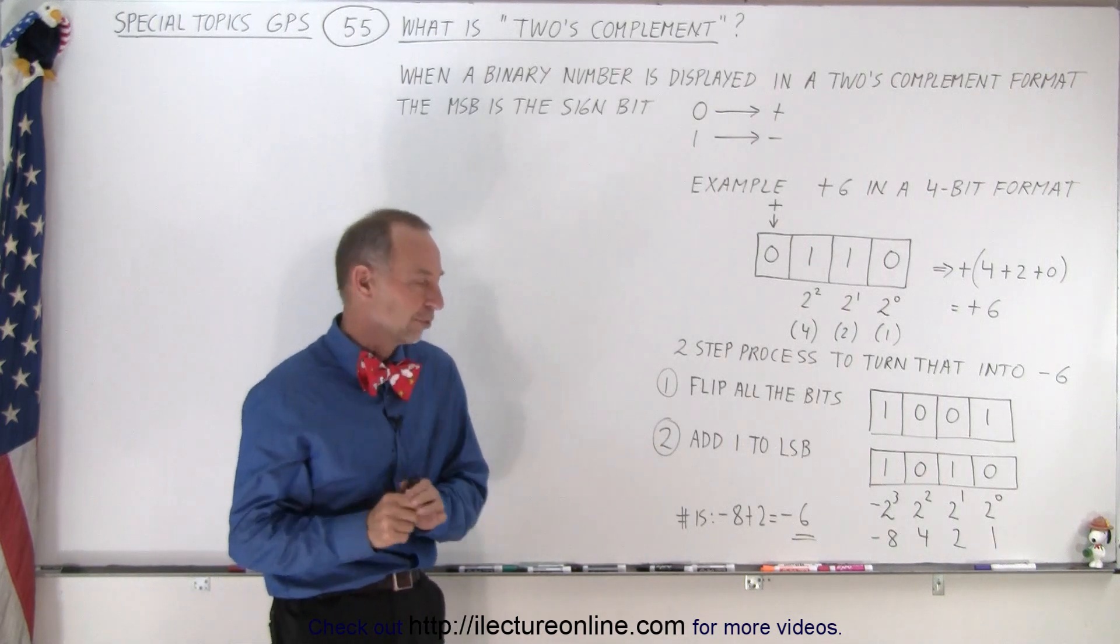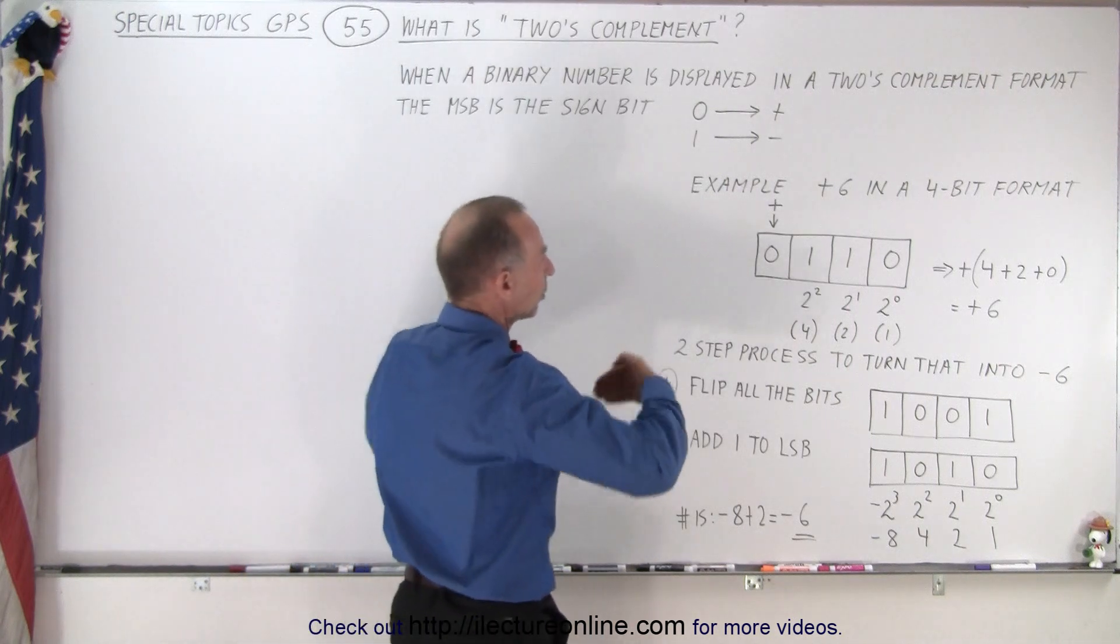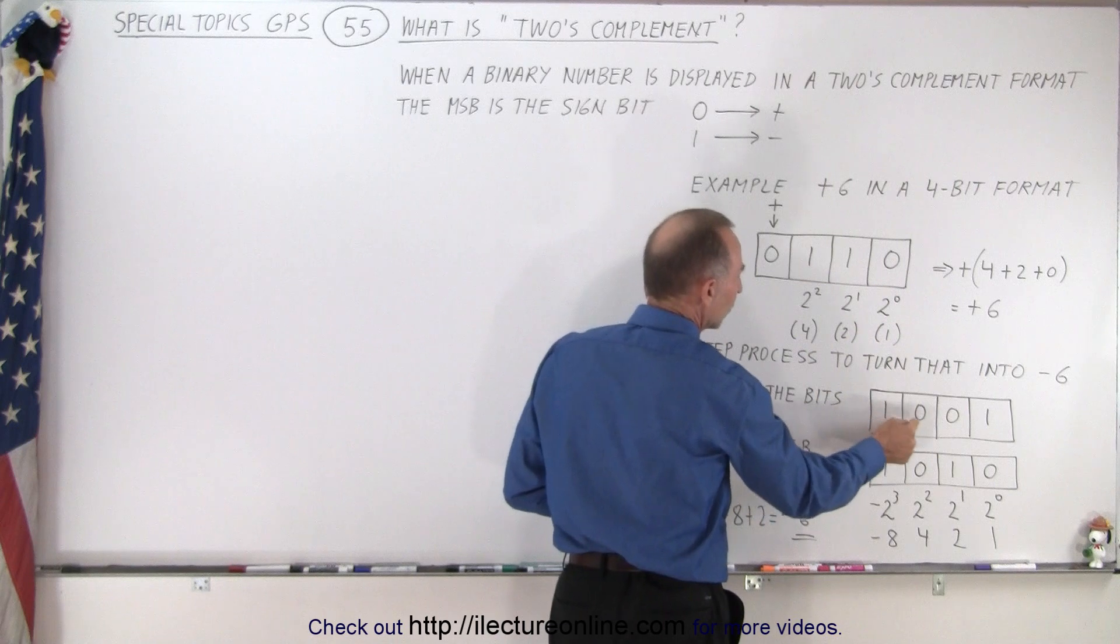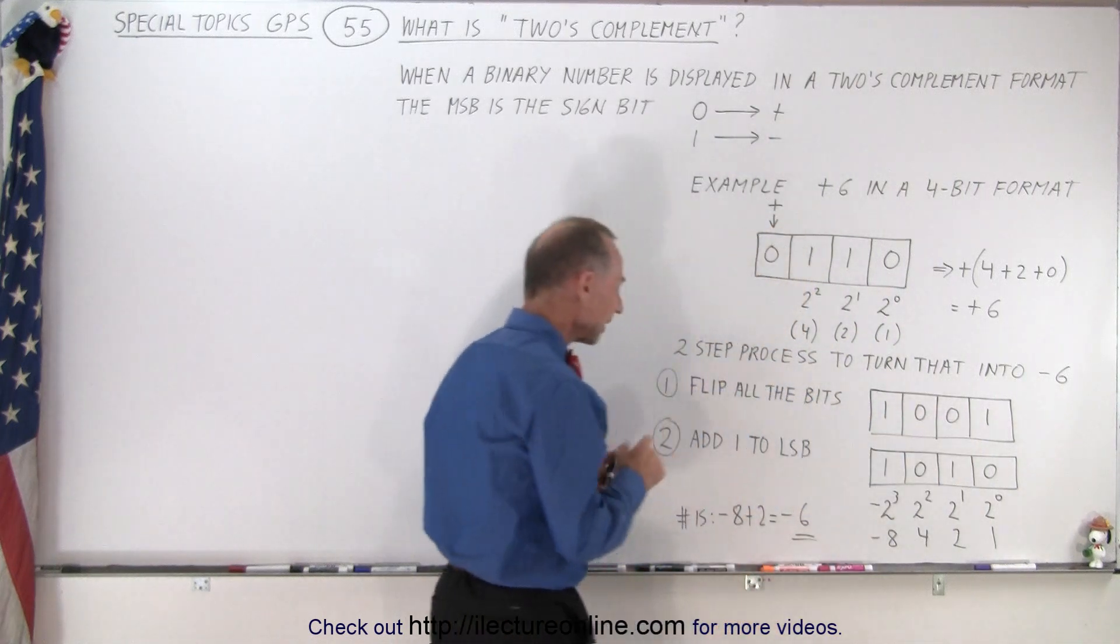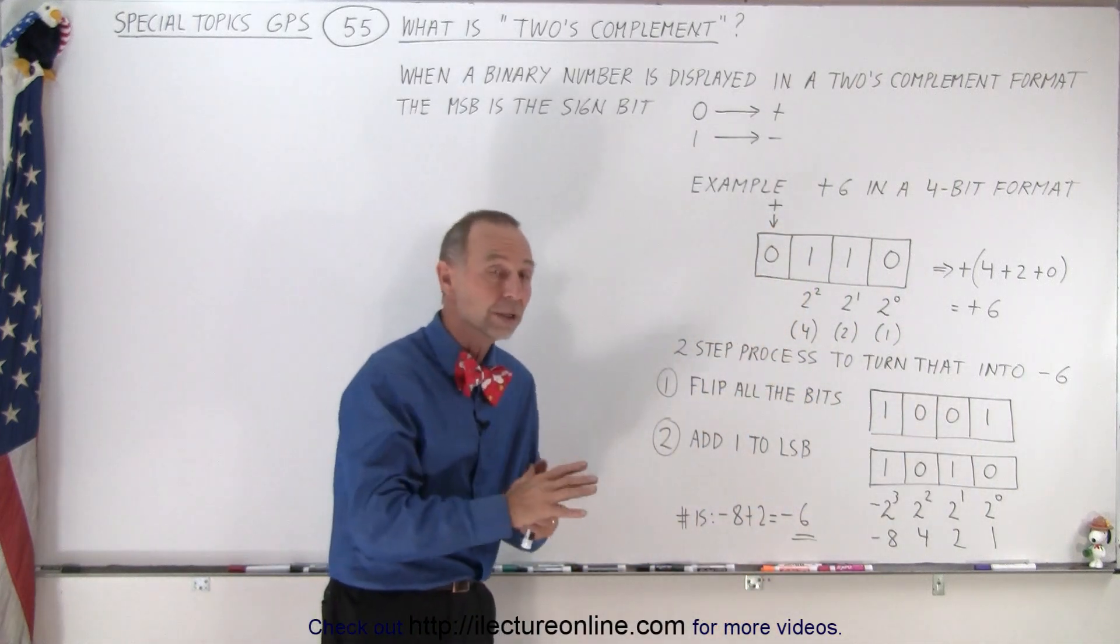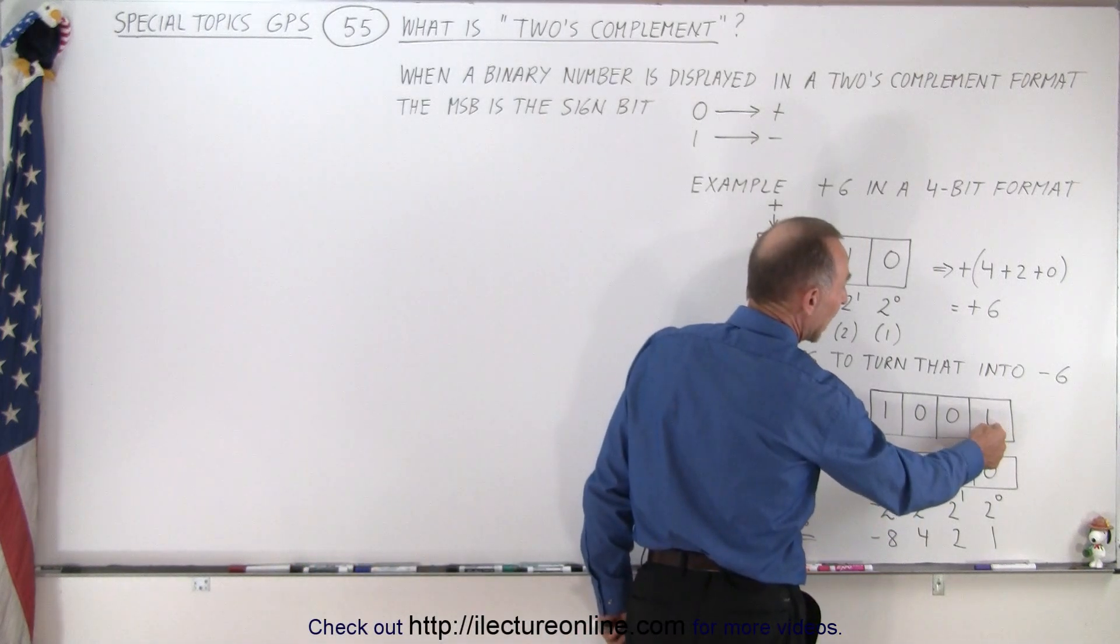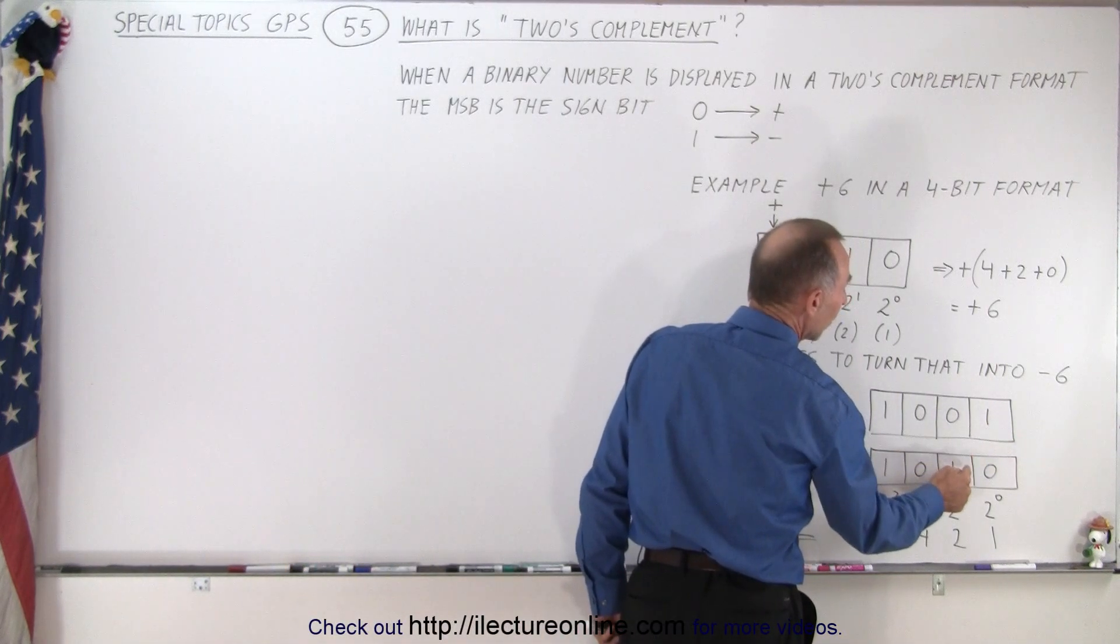Well, it requires two steps. The first step is we flip all the bits, so instead of having 0, 1, 1, 0, we turn into 1, 0, 0, 1. The second step is we simply add 1 to the LSB. So, since we already have a 1 there, when we add a 1, a 0, 1 then becomes a 1, 0.